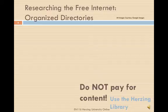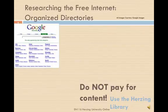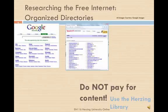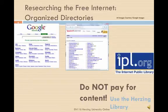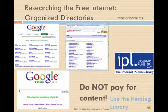Subject directories are different from general databases because they're organized into directories of topic-specific materials. Here are some examples: the Google Directory, Yahoo Directory, InfoMime, Internet Public Library, and Google Scholar. The biggest drawback about these sites is that they will link you to articles that you may not be able to find for free. Do not pay for access to these articles. Instead, try to find them at Herzing's library. Remember, you're already paying for access to these articles through your tuition dollars — you don't need to pay for them again on the web.